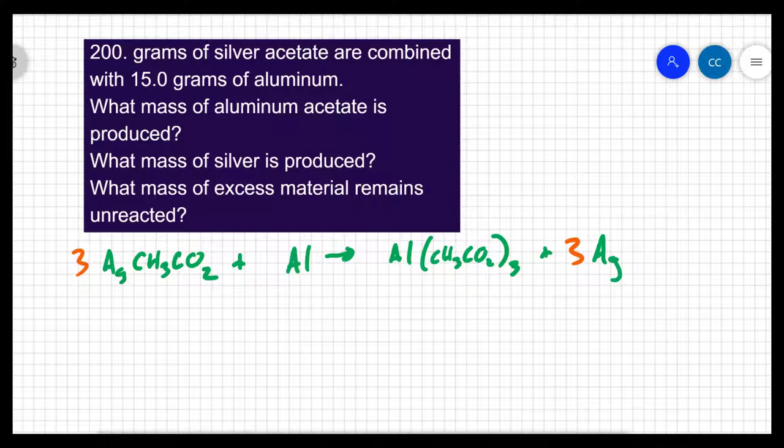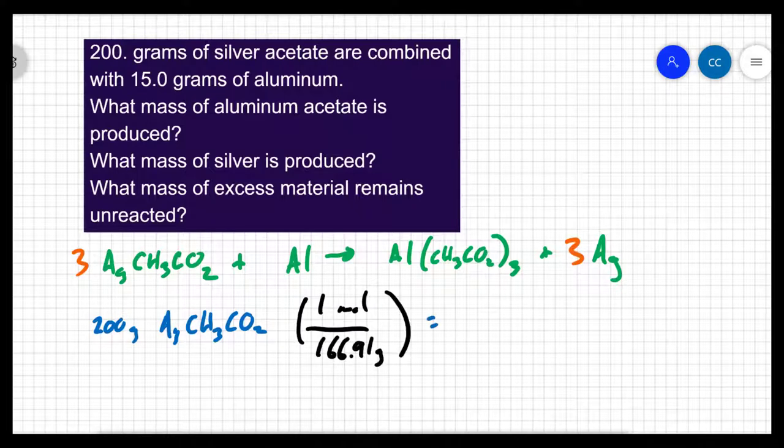The next thing we do is convert to moles. Our balanced equations never work in terms of grams. They have to be put into moles. So let's start with our 200 grams of silver acetate. Silver acetate has a molar mass of 166.91 grams per mole. So my moles of silver acetate would be 1.20 moles.